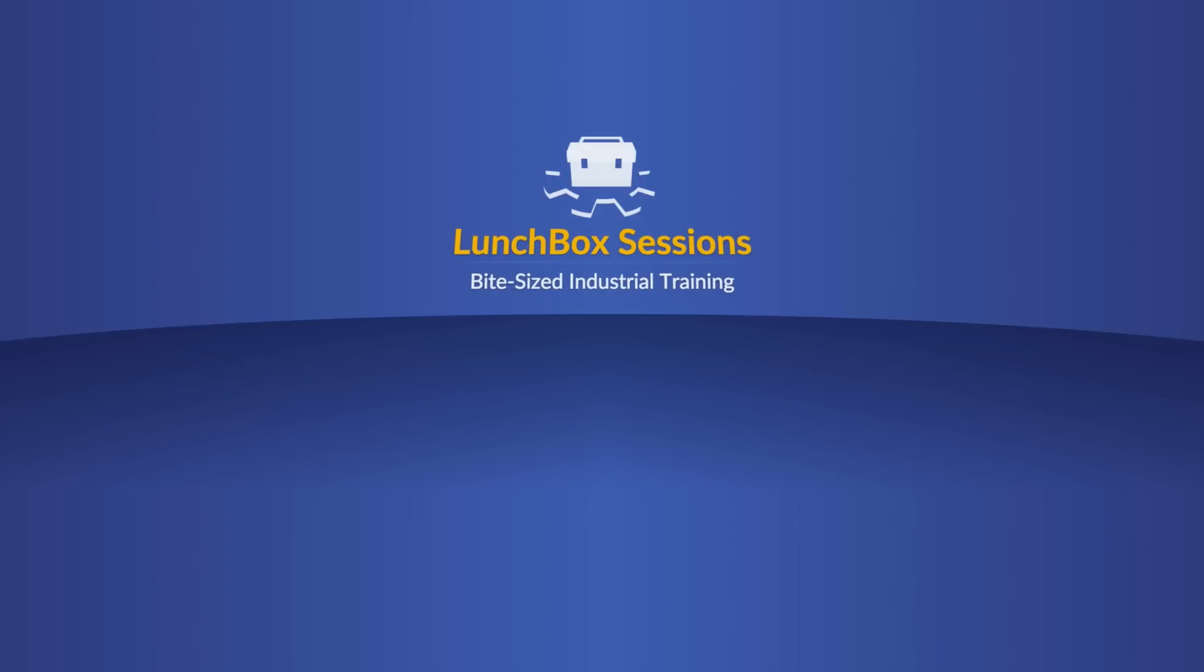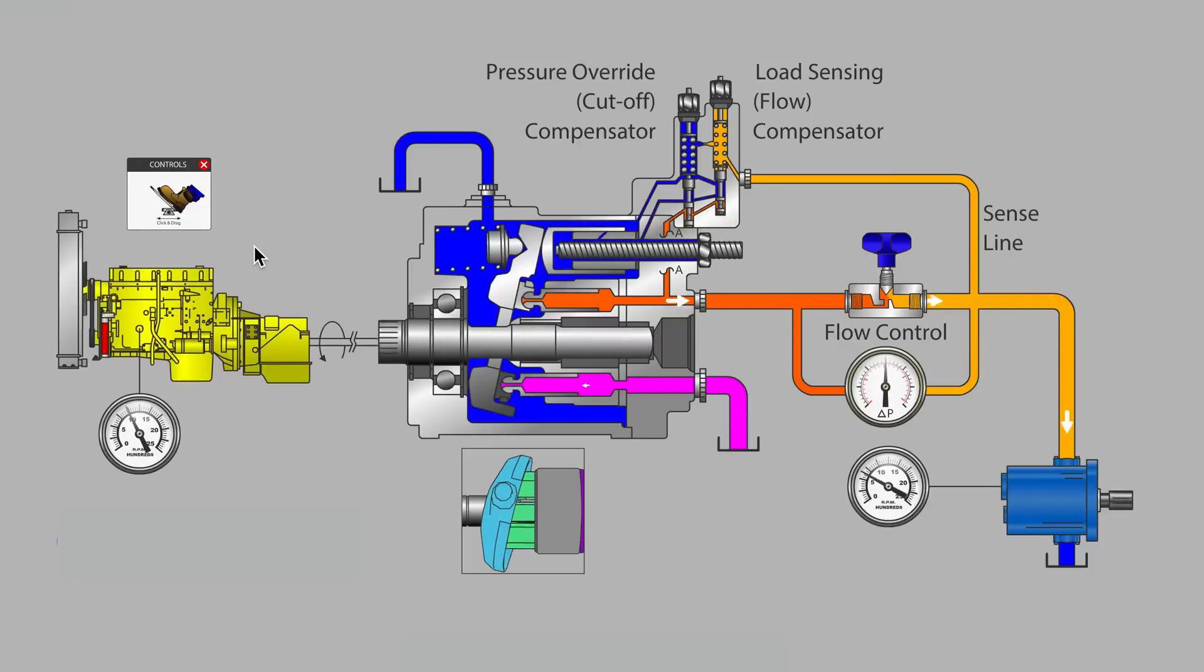Welcome to Lunchbox Sessions, bite-sized industrial training. Hello, this is Carl from lunchboxsessions.com, and this video will be about how a load sensing pump can be used to keep the speed of a hydraulic motor or hydraulic cylinder running accurately, even if there are some fluctuations in speed at the prime mover, whatever device is driving our pump shaft.